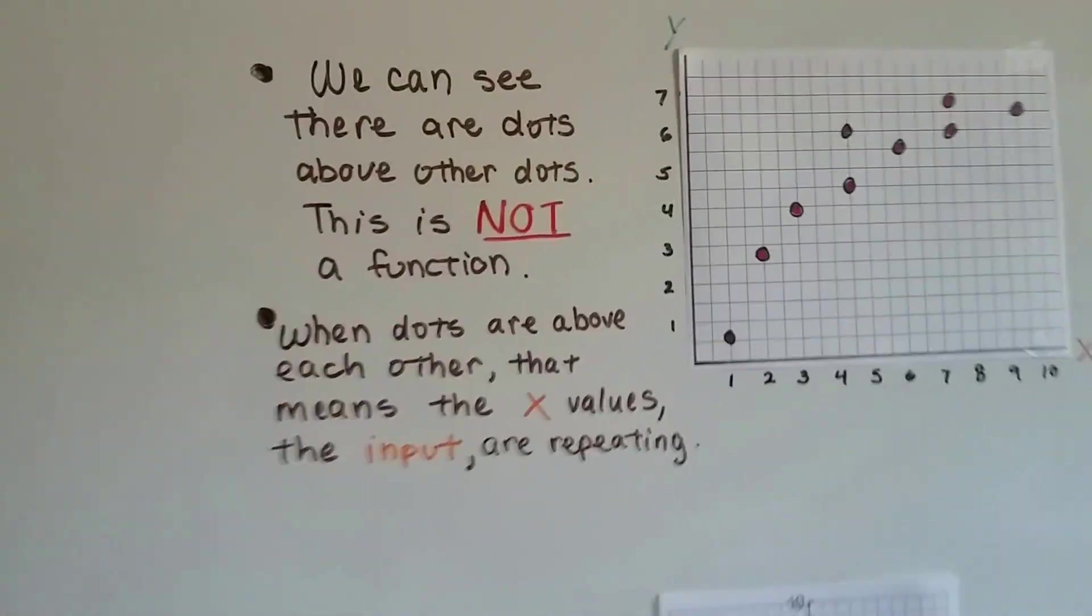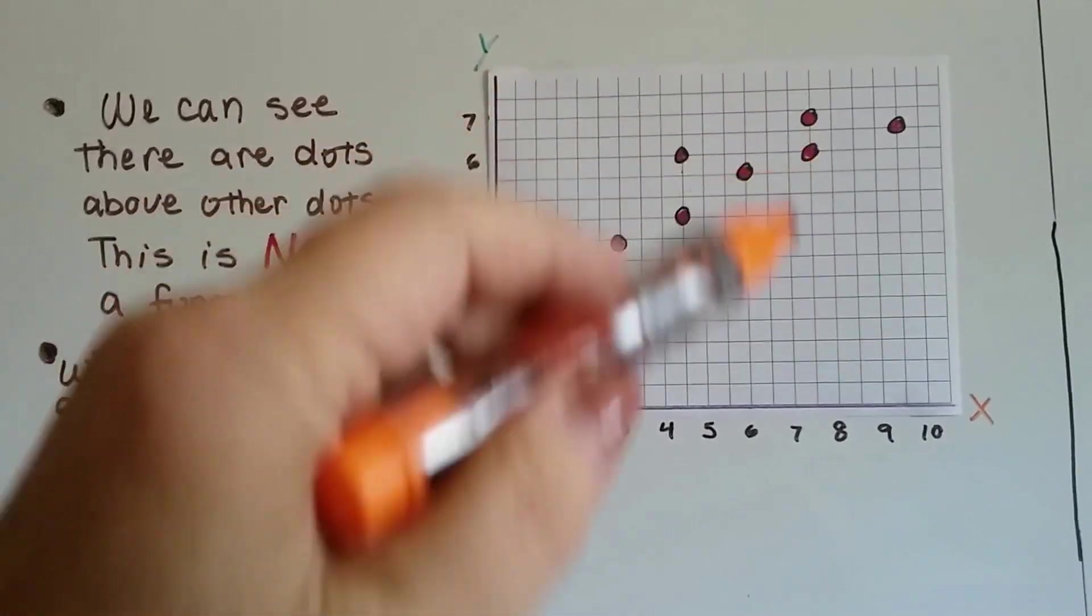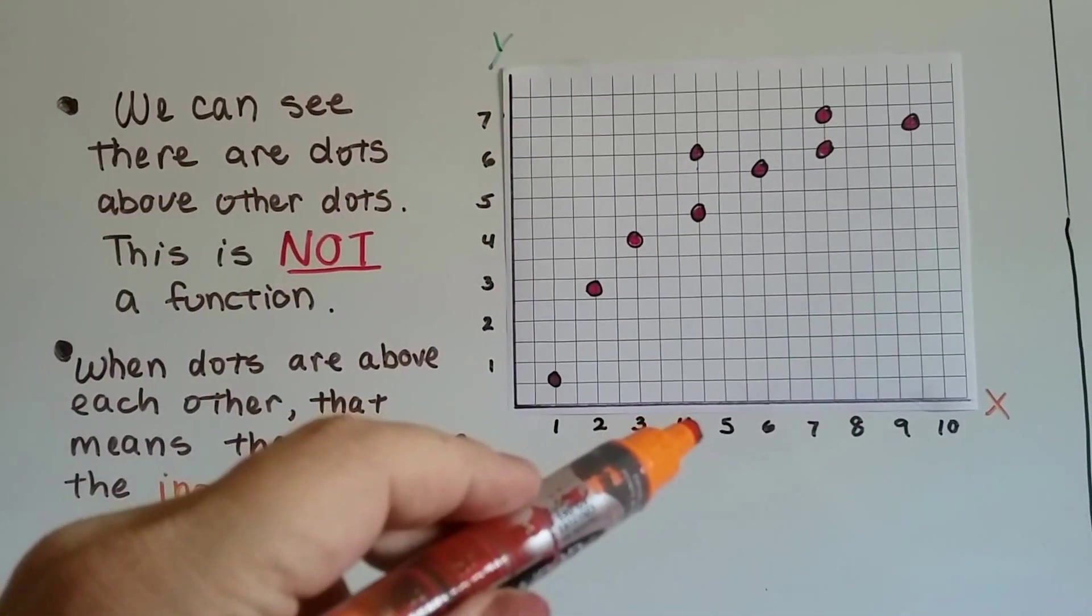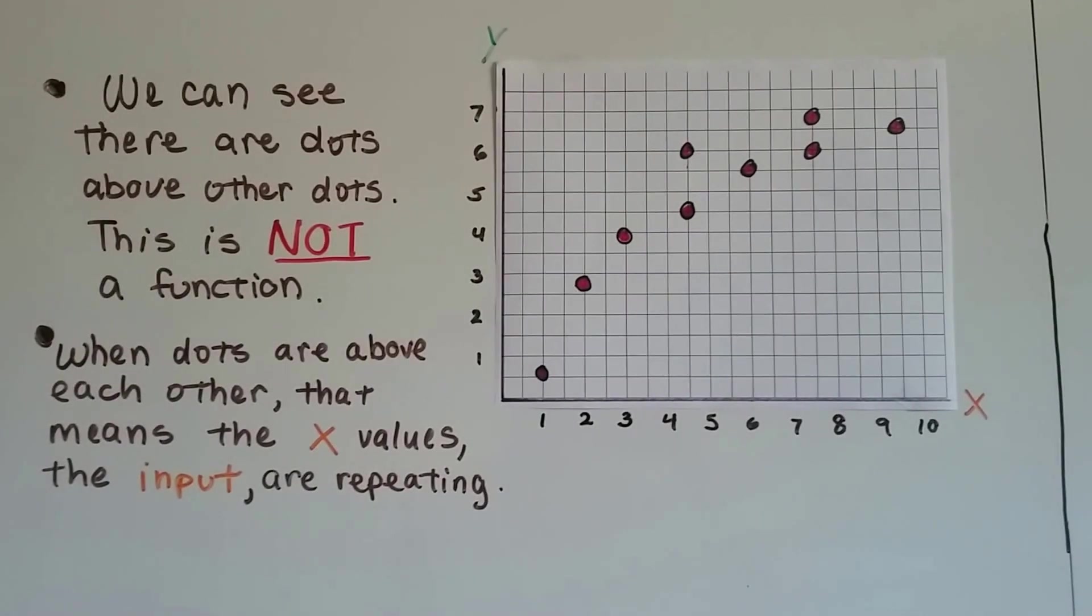Just like in this graph. Look at this. Look at how these points are right above each other. See? These are the x values. We can see there's dots above other dots, so this is not a function.